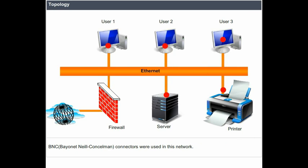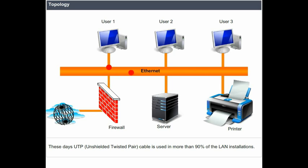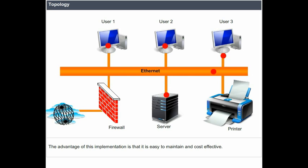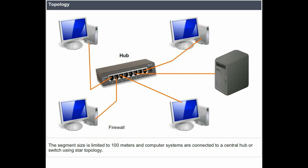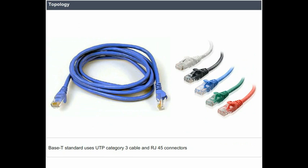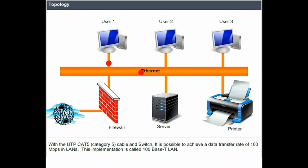BNC (Bayonet Neill–Concelman) connectors were used in Thin Ethernet networks. These days, UTP (unshielded twisted pair) cable is used in more than 90% of LAN installations. The advantage is that it is easy to maintain and cost effective. The segment size is limited to 100 meters and computer systems are connected to a central hub or switch using star topology. 10Base-T uses UTP category 3 cable and RJ45 connectors. With UTP category 5 cable and a switch, it is possible to achieve a data transfer rate of 100 Mbps, known as 100Base-T LAN.